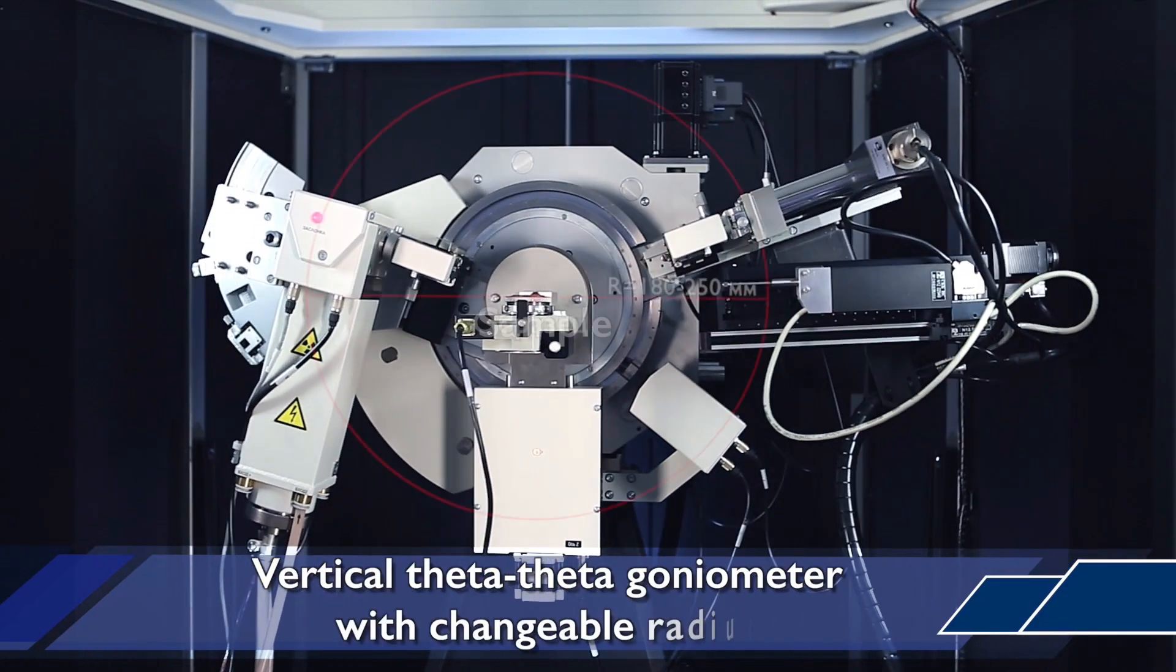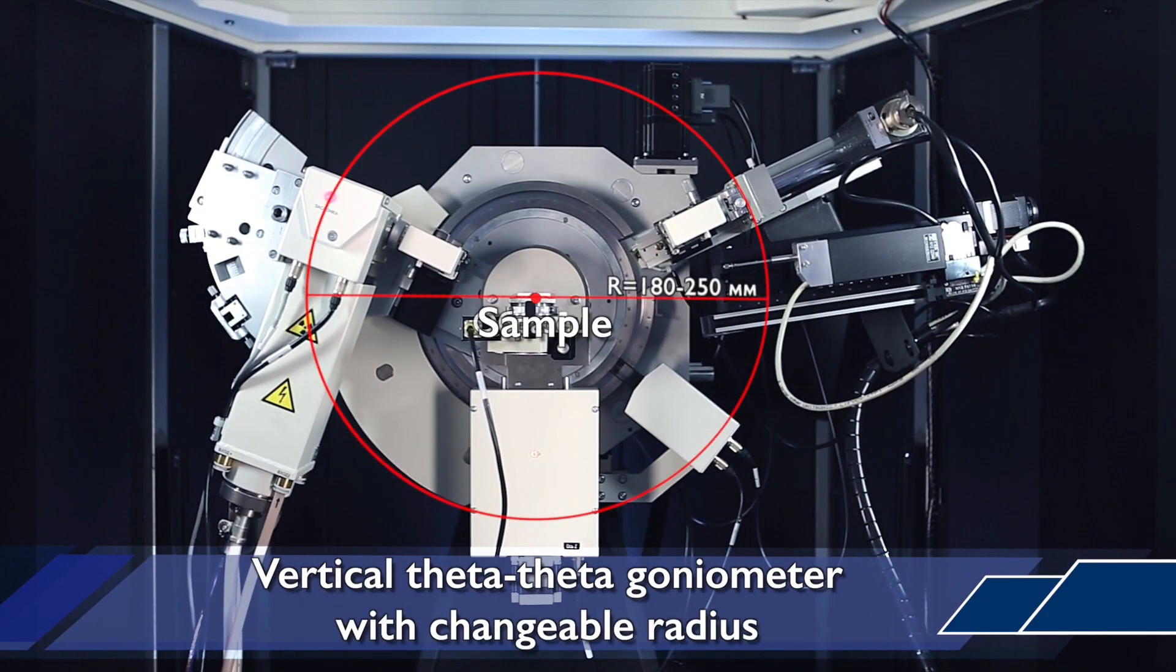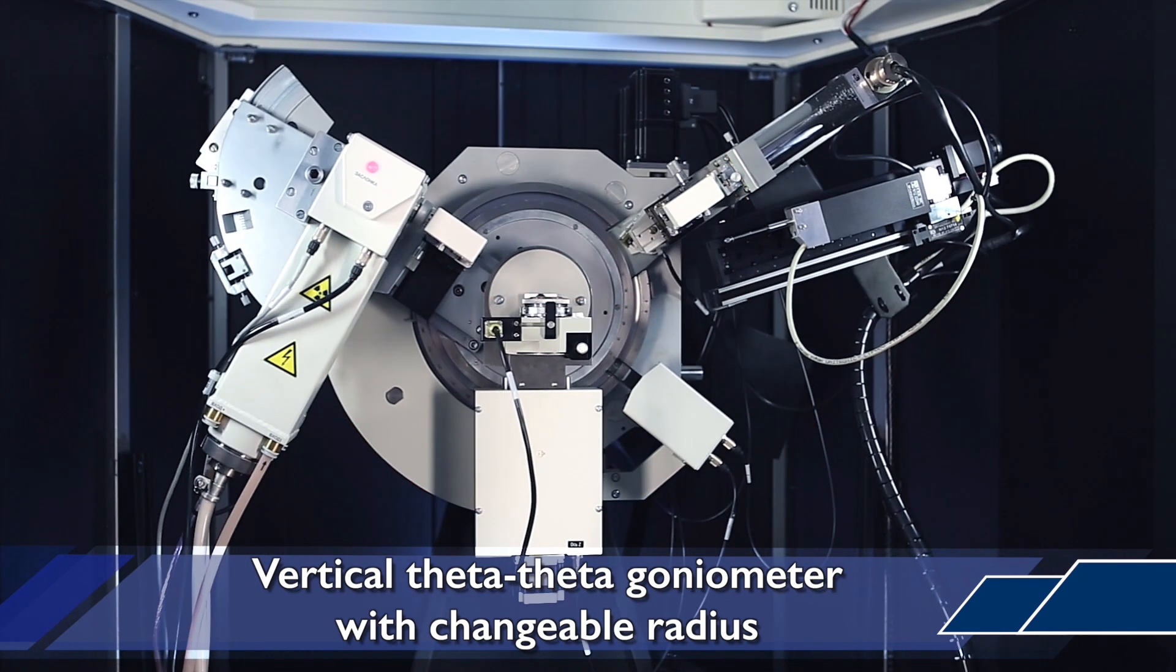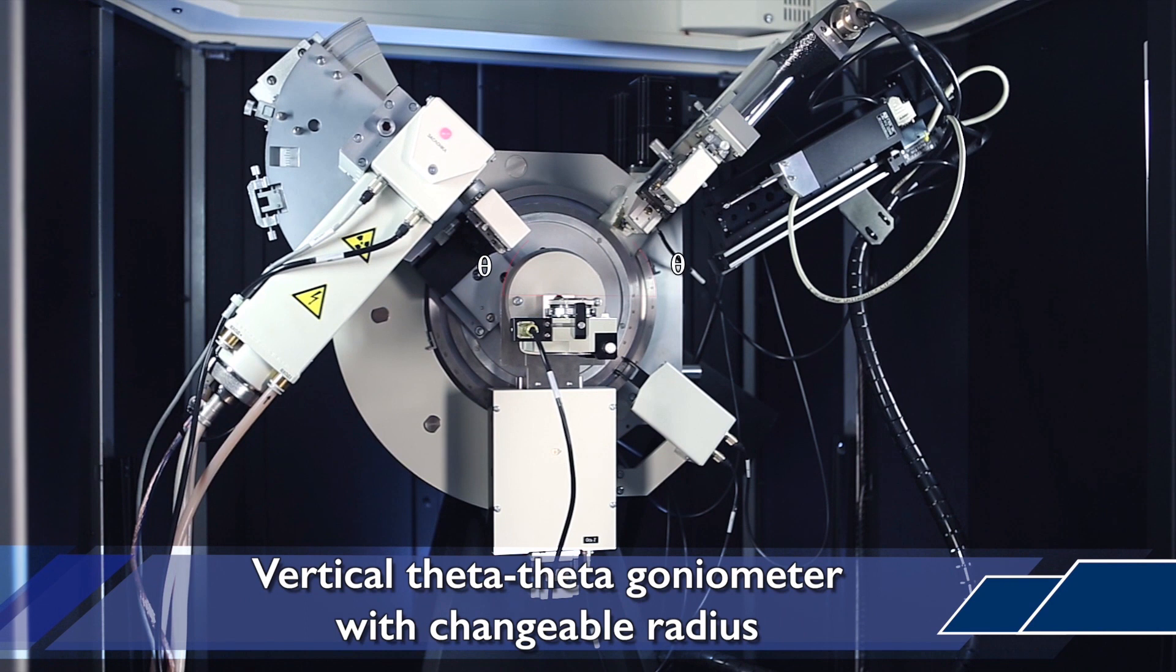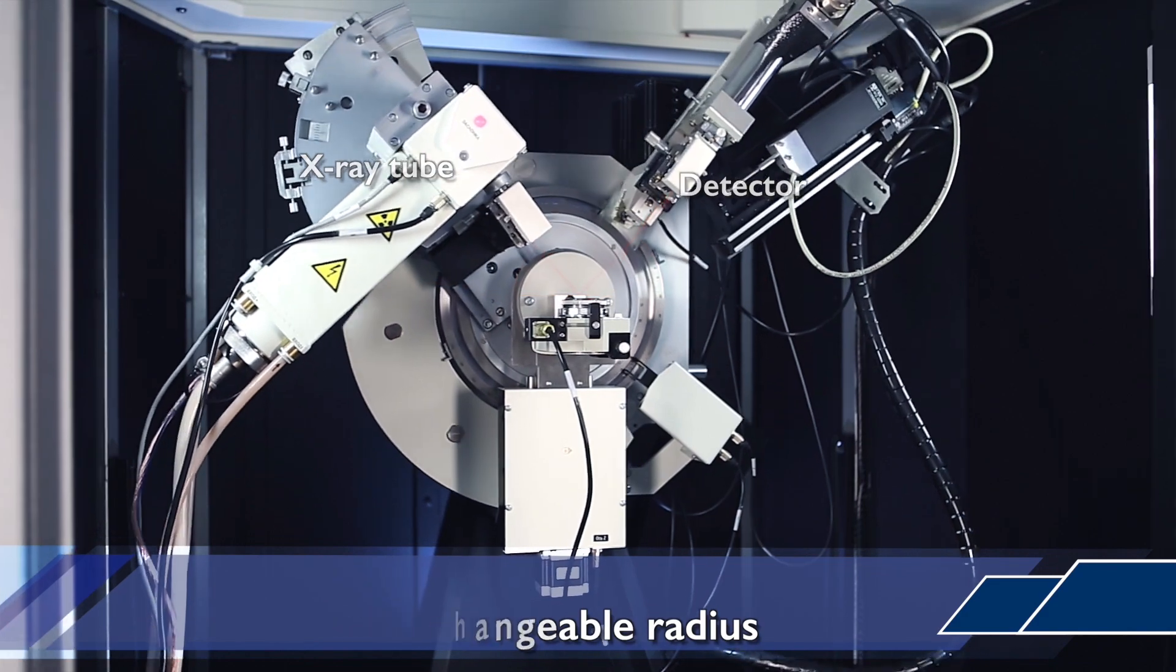The goniometer has a variable radius from 180 to 250 millimeters which allows changing angular resolution of X-ray optical system and enables installing different attachments, chambers and sample holders.